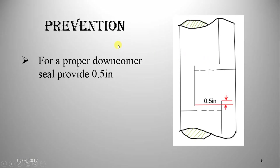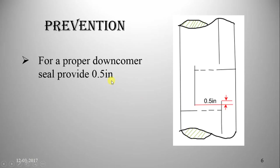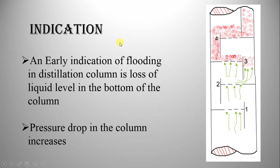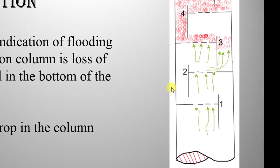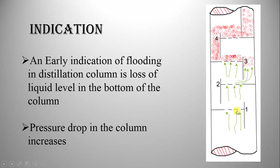The downcomer clearance should not be too small. To guarantee a proper downcomer seal, the bottom edge of the downcomer should be at least 0.5 inches below the top edge of the outlet weir. When flooding starts on a tray, all trays above that point will also flood and trays below that point will go dry. An early indication of flooding in a distillation column is loss of liquid at the bottom of the column, and the pressure drop in the column increases.